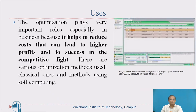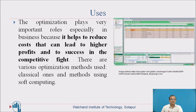Optimization plays a very important role, especially in business, because it helps to reduce costs, which can lead to higher profits and success in a competitive environment. There are various optimization methods used — classical ones or methods using soft computing. Optimization plays an important role in reducing costs or increasing profits and success in the competitive world.